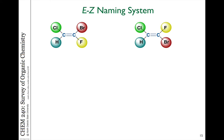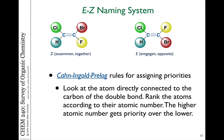The naming system we use employs the terms E and Z to identify the groups. Z is the German Zusammen, which means together, and E stands for the German word Entgegen, which means opposite. The rules for assigning this are based on the Kahn-Ingold-Prelog rules for priorities. Z means the two highest priority groups on either end of the double bond are on the same side, and E means they are on opposite sides.